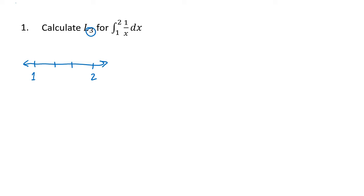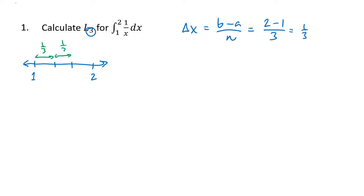To figure out where those dividing lines are, we want to calculate Δx, which is (b − a)/n. b and a are the bounds on my integral, so 2 minus 1, and n is the number of rectangles, giving us 1/3. Each interval is 1/3 of a unit wide. To find the first dividing line, I take 1 and add 1/3, getting 4/3. Then 4/3 plus 1/3 gives 5/3. As a double check, adding the last 1/3 gives 6/3, which equals 2.